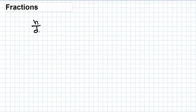The number below the line, d, is the denominator, and this number gives the name to the number of equal parts. This number must be different from zero, because if we divide something by zero, we are going to get infinity. The number above the line, n, is the numerator, and this number tells us how many equal parts there are.